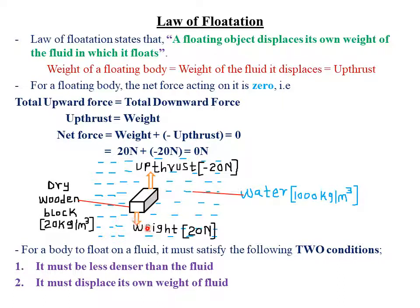For a floating body, the net force acting on it will always be equal to zero. The weight acts downward — gravity always pulls objects towards the center of the earth. The upthrust, which equals the weight of the fluid displaced, always acts upward. Upthrust is simply an upward force exerted on a body immersed in a fluid. Force is a vector quantity — it has both magnitude and direction — so we must consider direction.